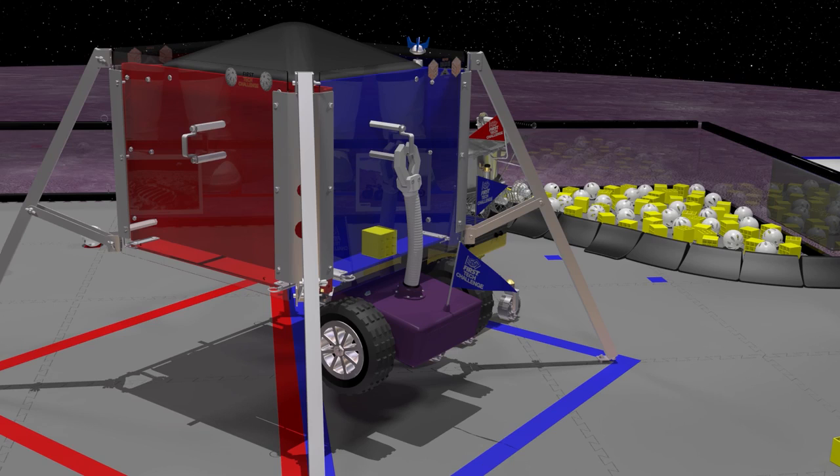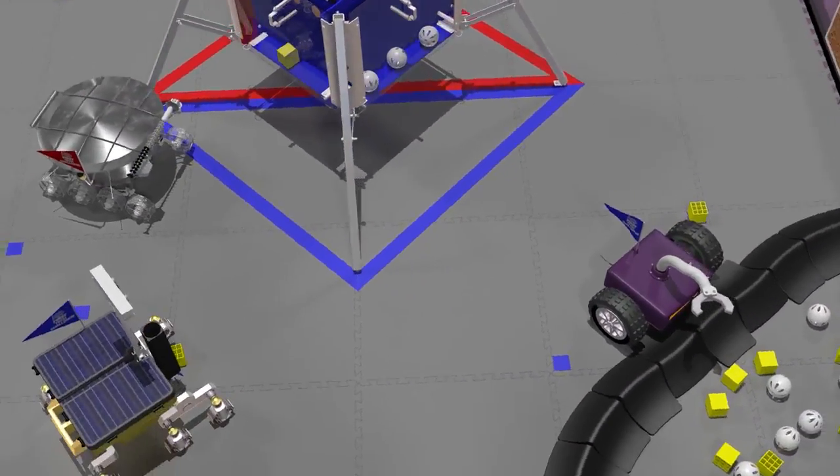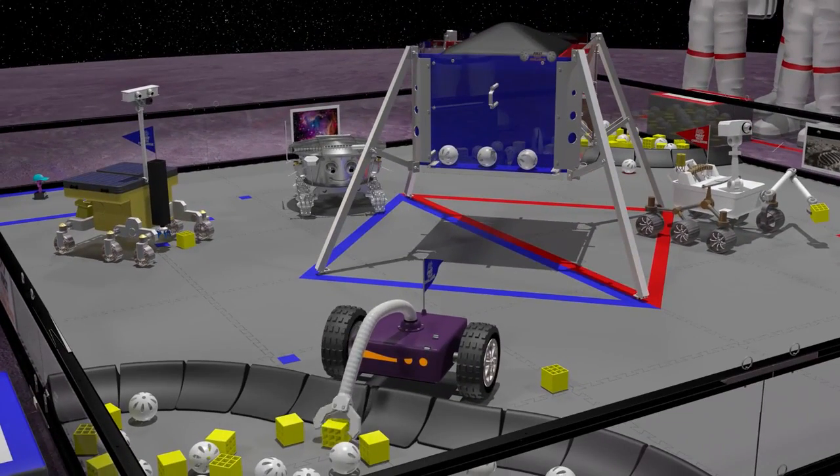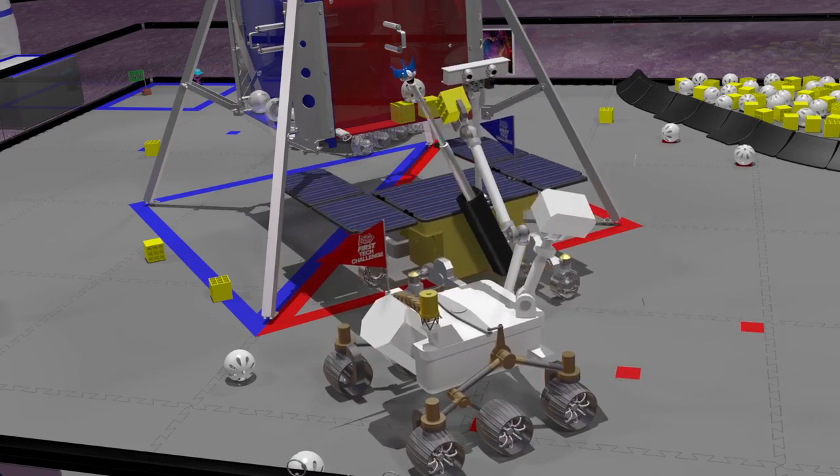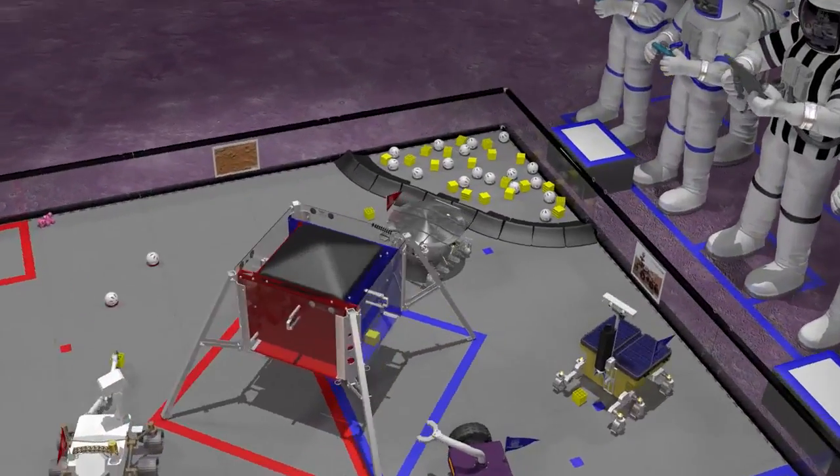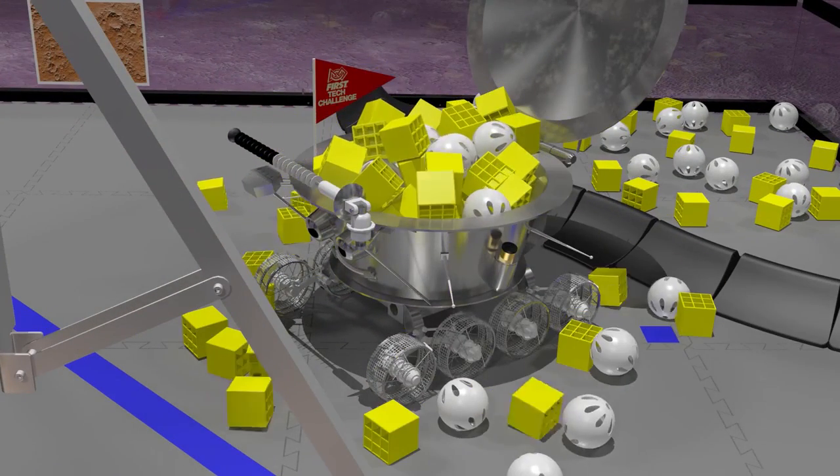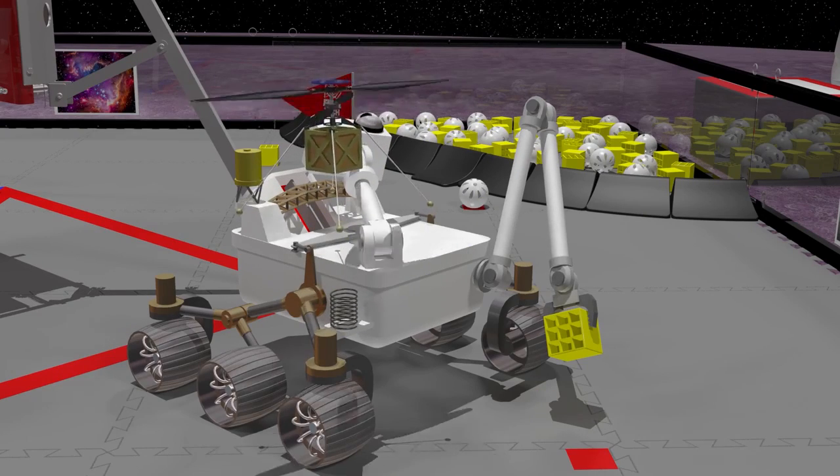There are many ways to score in Rover Ruckus, but there are also rules that if not followed will award points to your opponents. For example, robots may not launch minerals into the lander from outside of the alliance's landing zone. Robots may not block access to the lander. A robot may not control more than two minerals at a time unless the minerals are in the crater. And parts may not be deliberately detached from robots during a match.